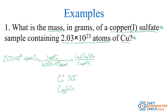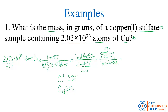Now I've converted copper into copper(I) sulfate, but I want mass. To turn moles into mass, we use molar mass. Adding up 2 coppers, 1 sulfur, and 4 oxygens gives 223.17 grams — the mass of one mole of copper(I) sulfate. Moles cancel and I'm left with grams. This number has 3 significant figures, Avogadro's number has 4, the mole ratio is exact (exactly 2 coppers), and the molar mass has 5. The fewest is 3, so the answer is 37.6 grams.